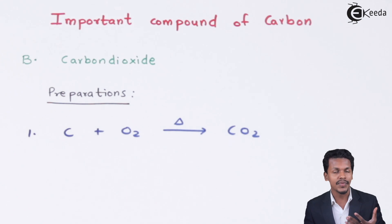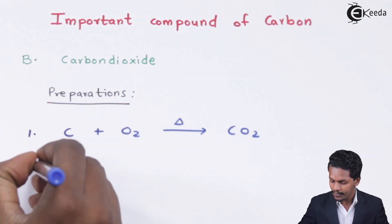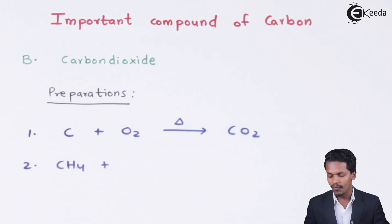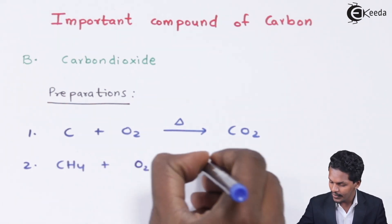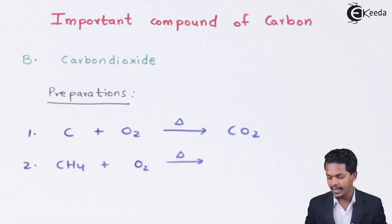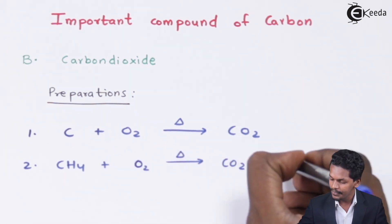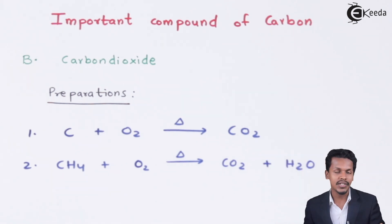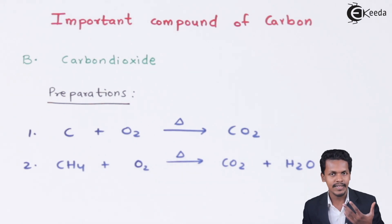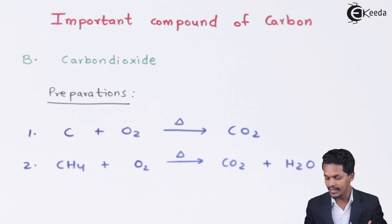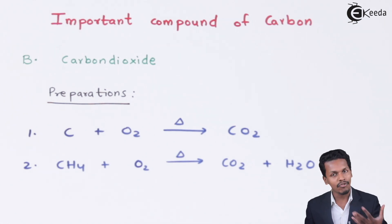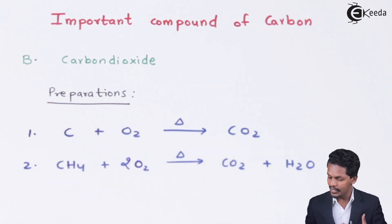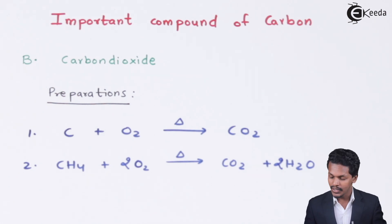Another method from which we can prepare carbon dioxide: if we have CH4, that is methane, and this methane undergoes oxidation, then O2 reacts with methane and carbon dioxide is formed along with water. This kind of reaction is known as a combustion reaction because methane can catch fire. In the presence of oxygen it produces CO2 as well as H2O gas and a large amount of energy. This reaction must be balanced to get CO2 along with water.